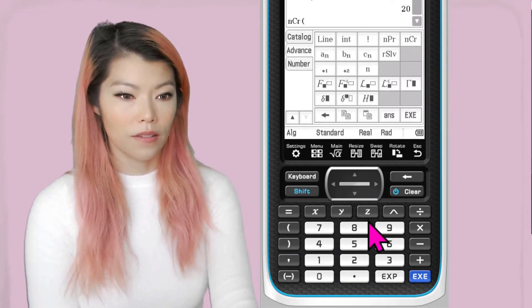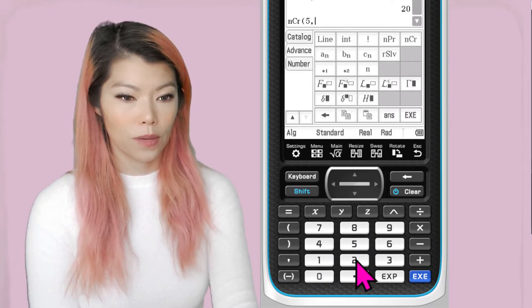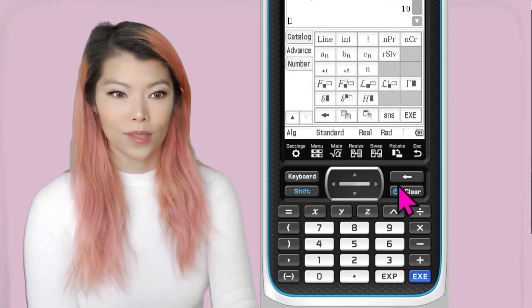Or NCR, 5 comma 2, that gives us 10. So recap,